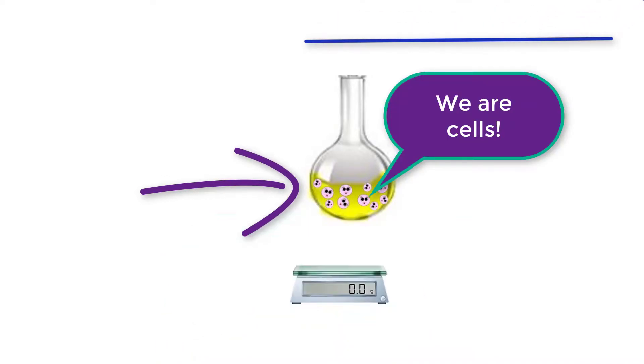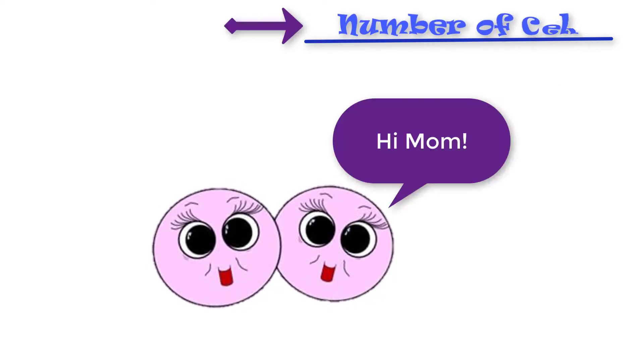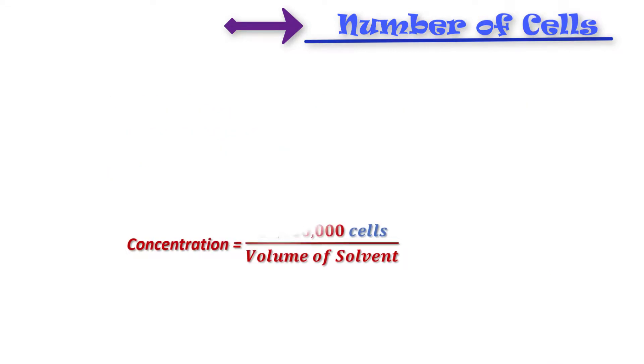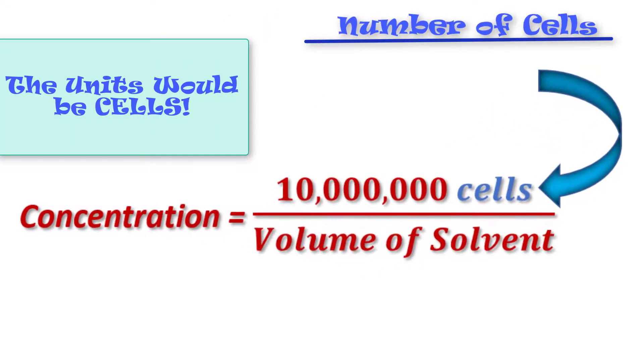So the unit for the top number in our concentration will simply be cells, or number of cells. So let's say we had 10 million cells in our solution. The top number would simply be 10 million cells. The bottom number of our ratio is the volume of solvent.